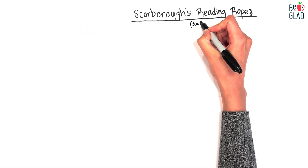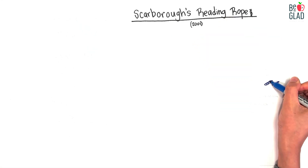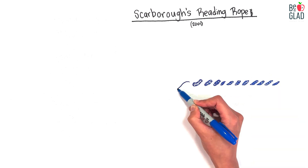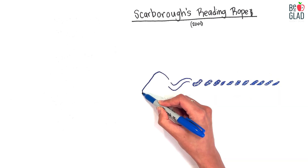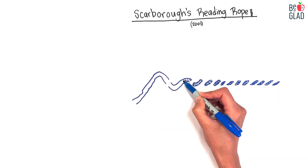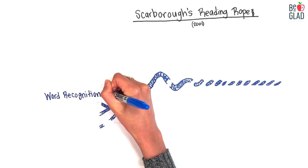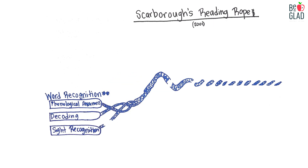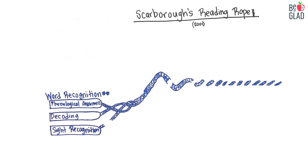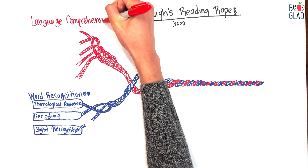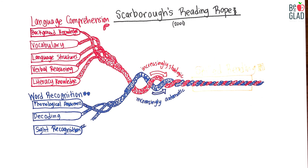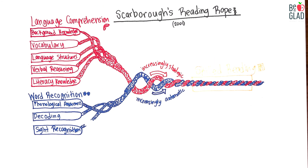Fluency focuses on the two big strands in Scarborough's Reading Rope. It's related both to word recognition, where students are automatically recognizing words, as well as language comprehension.